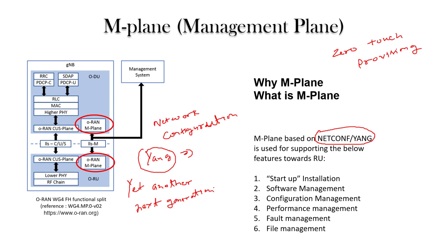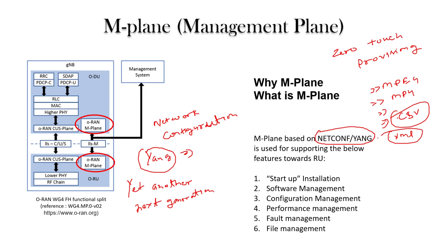Data models can be of different types — for example, video files use MP4 or MPG formats, and audio has its own formats. In communication systems, we use formats like CSV for storing counters and data. Similarly, YANG and XML are data models used here. Previously XML was used; now YANG model is the standard. The M-plane uses NETCONF for configuration and YANG as the data model.